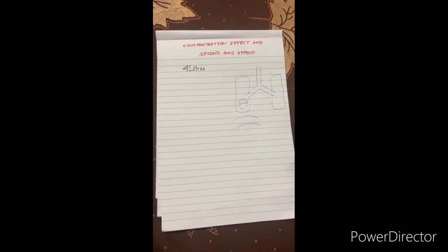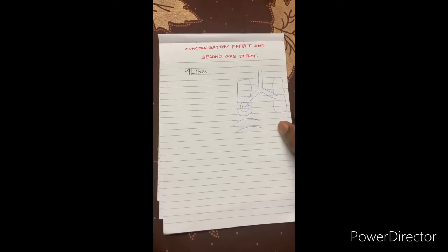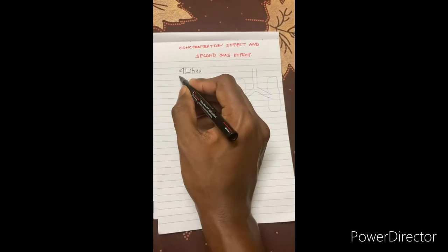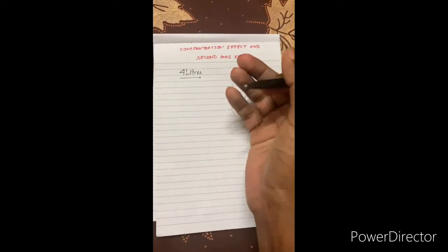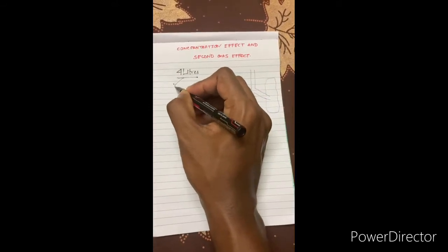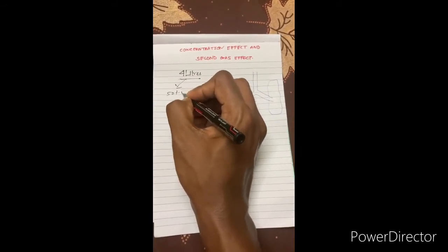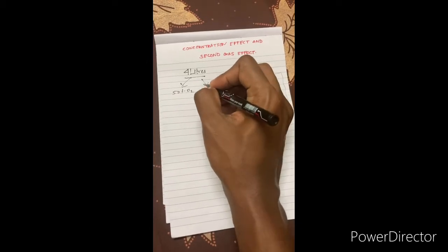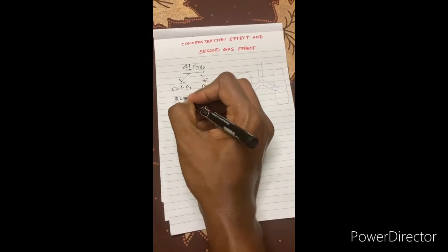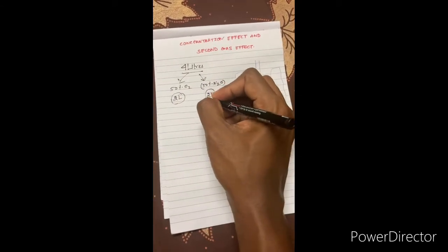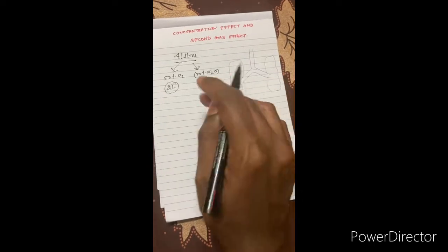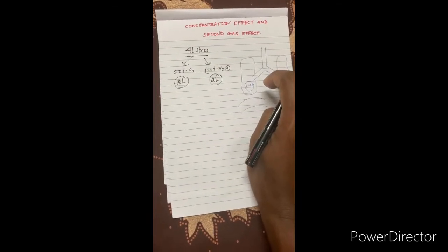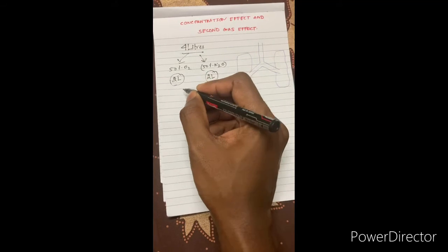Consider a person whose total lung capacity is four liters. When a patient takes a fresh gas flow intake of four liters, fifty percent is oxygen and fifty percent is nitrous oxide — so approximately two liters of oxygen and two liters of nitrous oxide total. This is the normal total lung capacity scenario I mentioned.